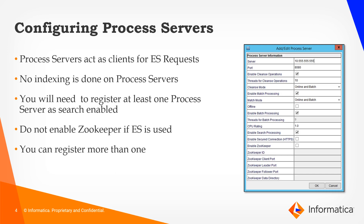After publishing your changes, you will have to go back into the hub console to the process server. Process servers act as clients for ES requests — no indexing is actually done on process servers. However, they act as a broker for all communication between data and the Elasticsearch node or cluster. You will need to register at least one process server in each ORS as a search-enabled process server. Do not enable Zookeeper if Elasticsearch is used. You can also decide to have more than one process server act as a broker for your Elasticsearch service.